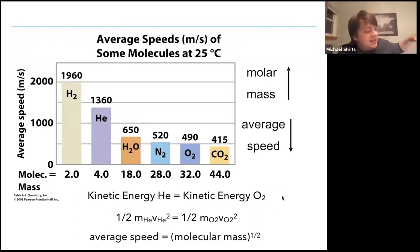You can see as the mass goes up, it drops down quite a lot. Water at 650 meters per second. We just worked out that at a slightly different temperature. Nitrogen, oxygen, carbon dioxide gets slower and slower.